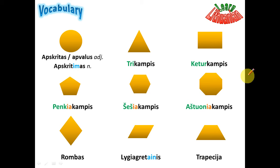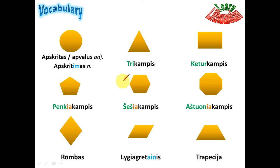The high requirements for stress — since there are rules for stressing words — mean the correct stress should be at the end of the first word if you're talking about the shape: ketúrkampis. But I noticed that not many people say ketúrkampis; mostly people say ketúrkampis when they want to say a rectangle. So let's just say: trikampis, ketúrkampis, penkiakampis, šešiakampis, aštuoniakampis — because you can easily get confused with the stress and you'll be perfectly understood either way. That's it about the stress.